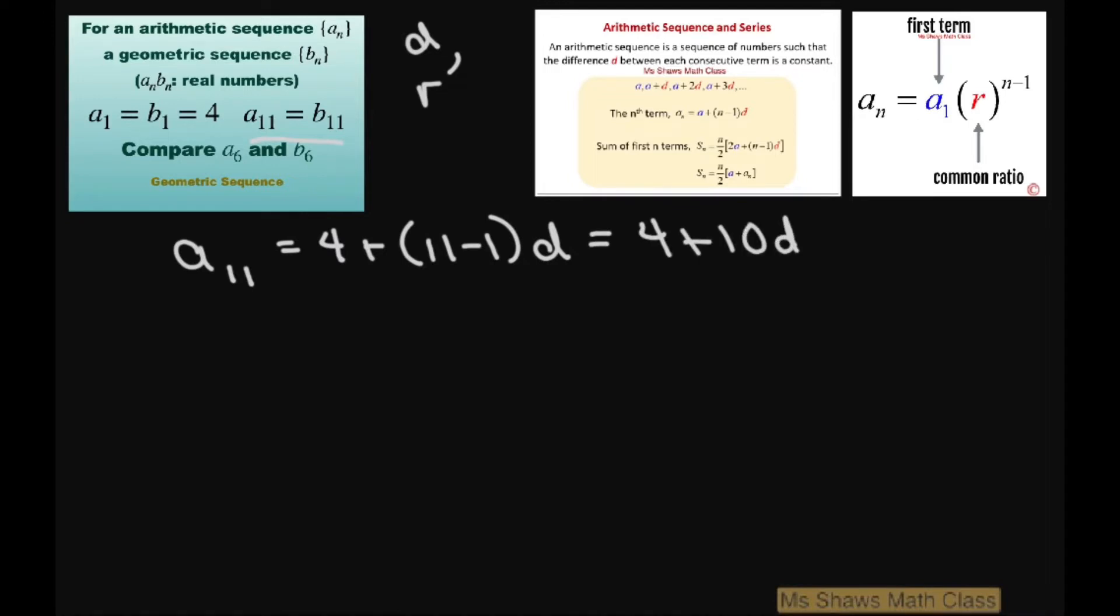And then b_11 equals 4r, using this formula here, to the power of 11 minus 1, and that equals 4r to the power of 10.